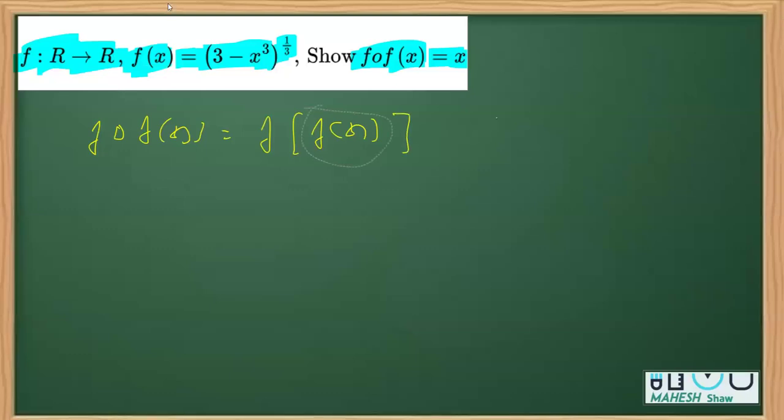So I'll write f bracket, and I'm going to replace this f(x) with the f(x) given in the question, which is (3 - x³)^(1/3).